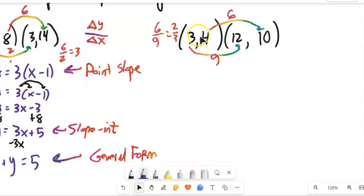So point-slope, I'll just grab this first point. y minus the y part equals the slope times x minus the x part. That's point-slope form right there.